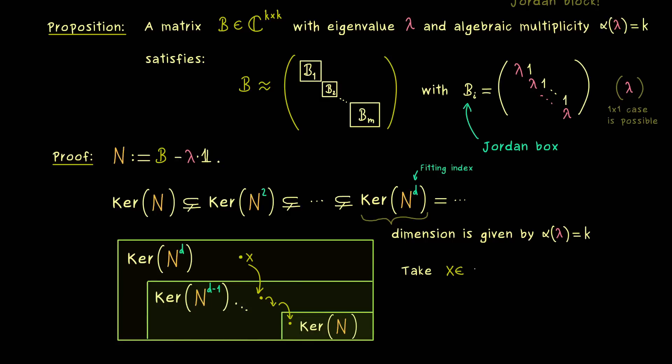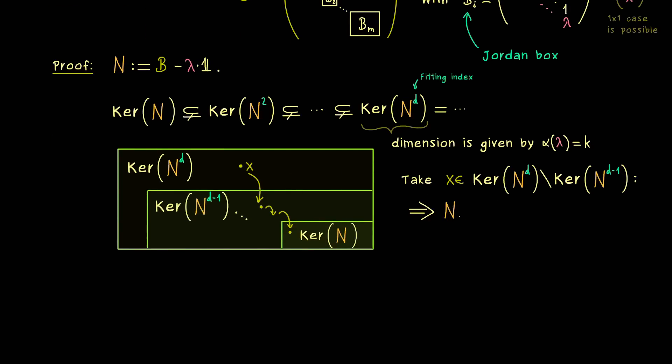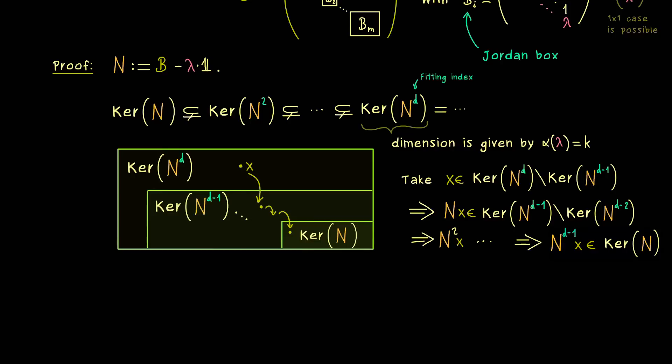So the formula is quite simple. Just take x in the kernel of Nᵈ. However, it should not lie in the kernel below. And if we do that and we know it's possible, we get a whole chain of vectors. Namely, the next one in the chain would be the vector Nx. And by definition of the vector x, it now lies on the level d-1, but not in the level d-2. So again, you see recursively, this works until we reach the last level. More precisely, Nᵈ⁻¹ of x is an ordinary eigenvector.